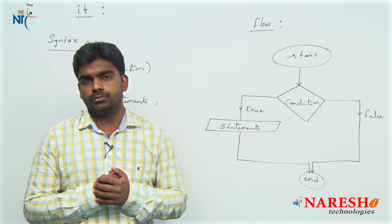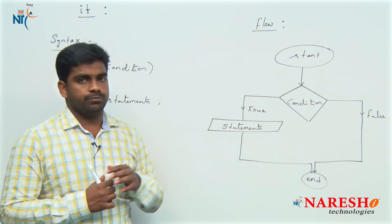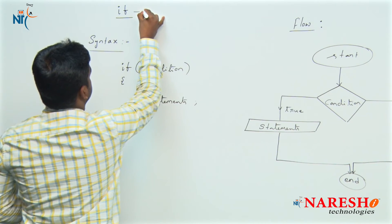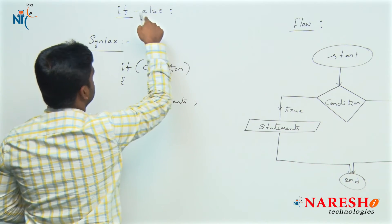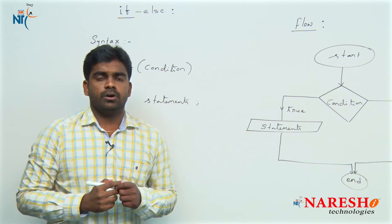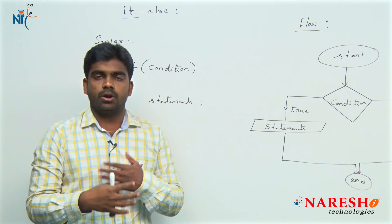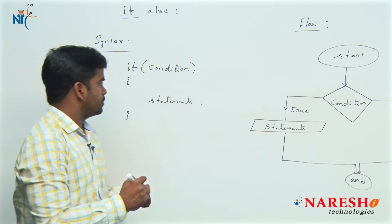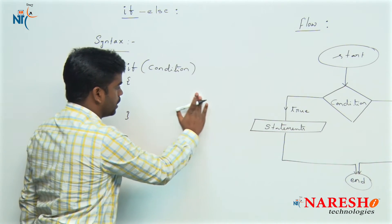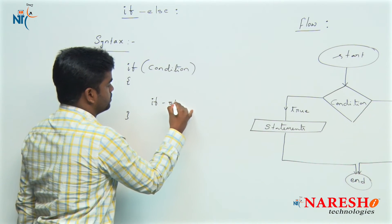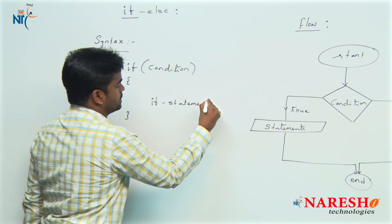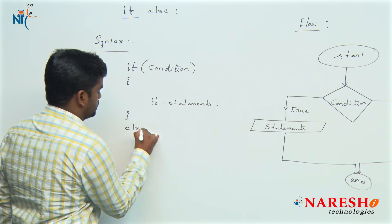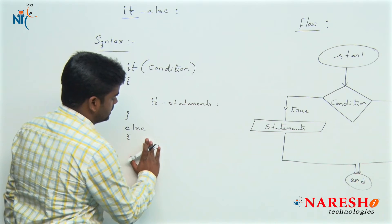Those are the rules we follow in most programming languages for the if block. Now, if it is an if-else block, the else block is used to provide optional information — whenever the given condition is false. If the condition is true, if-block statements execute. If the condition is false, else-block statements execute.